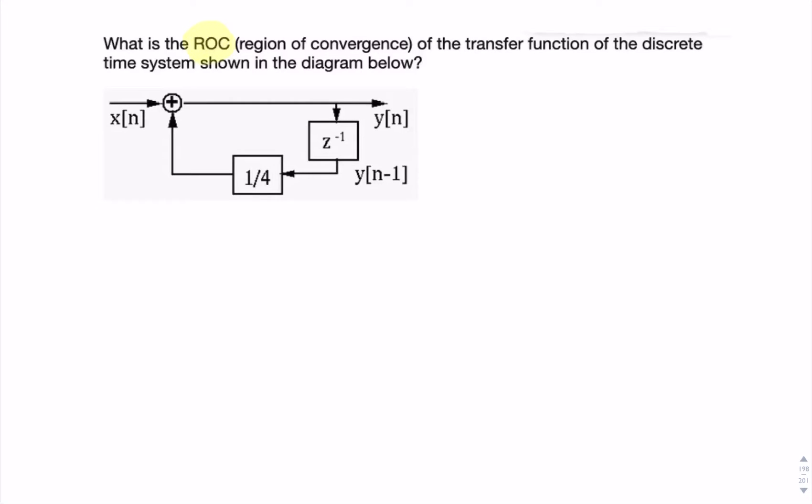This question is asking for the region of convergence. That means the values, or the range of values, for z, for which the z-transform exists.